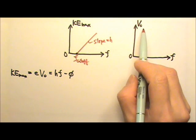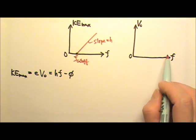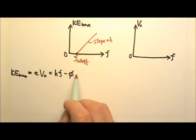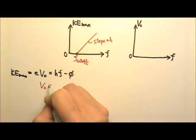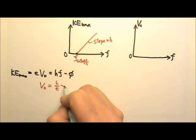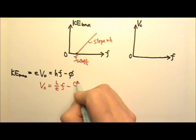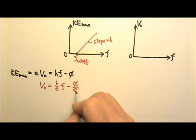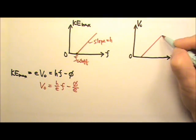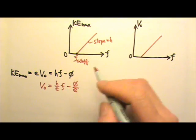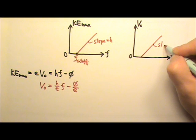As for the stopping voltage versus F graph, we can use this part. I can divide by E on both sides, so I get V0 equals to H over E times F minus the work function divided by E. So I will get the same shape graph, but the slope would be H over E.